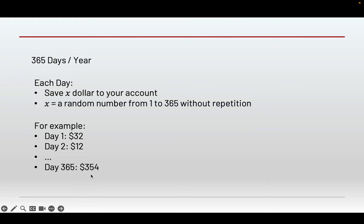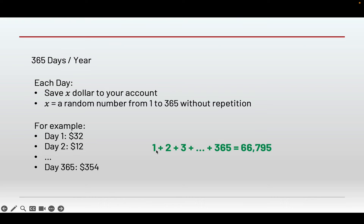You save every day until the last day — let's say for the last day you save 354 dollars. If you rank the amounts from smallest to largest, you're saving one dollar, two dollars, all the way up to 365 dollars, just shuffled across 365 days. In total, you'll actually save 66,795 dollars, which is a lot. Let's take a look at how we apply this in Python.